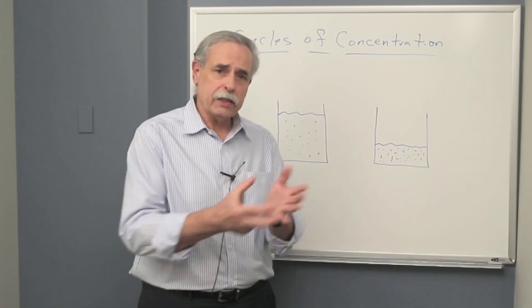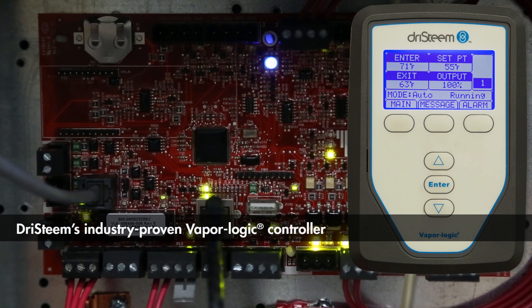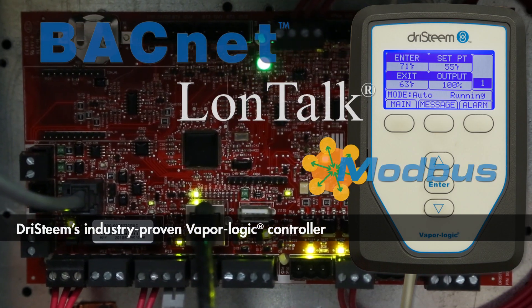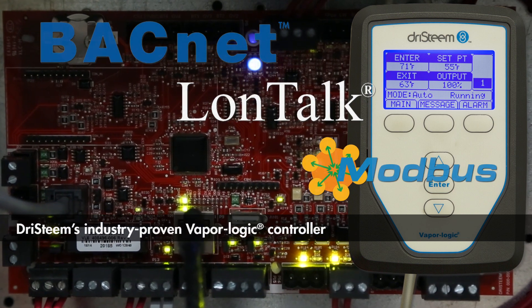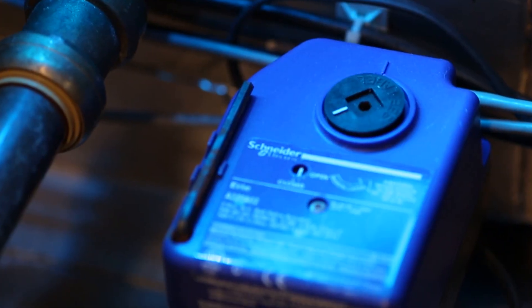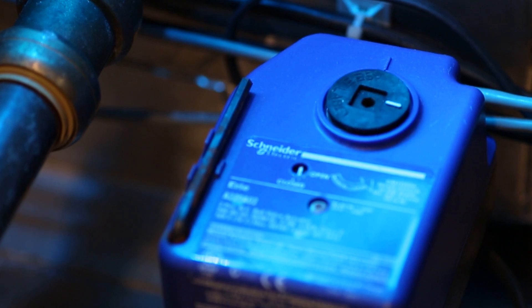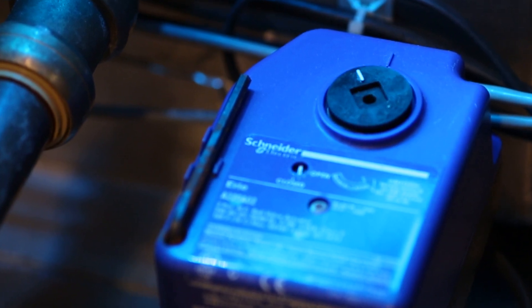Once that's done, that gets put into the software, and the software understanding the usage of the water then manages the drain cycles such that those cycles of concentration are maintained for optimal performance in the wetted media system.